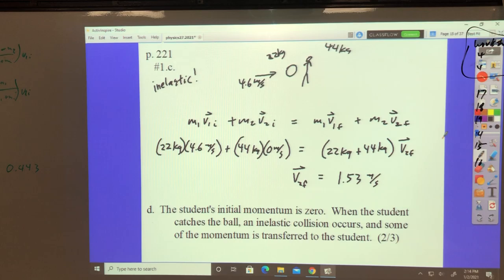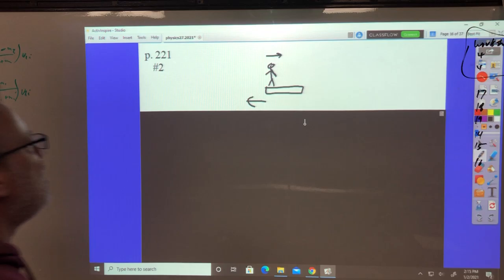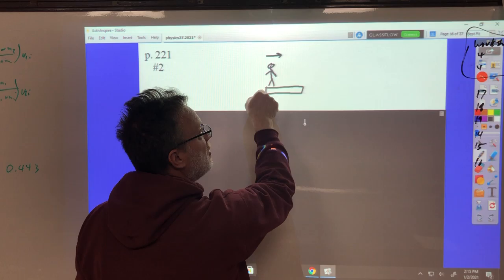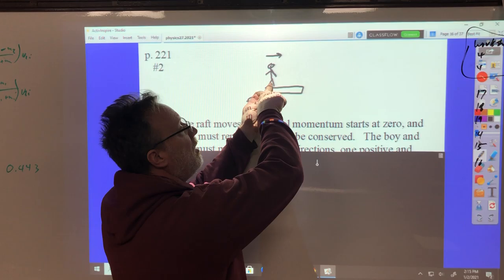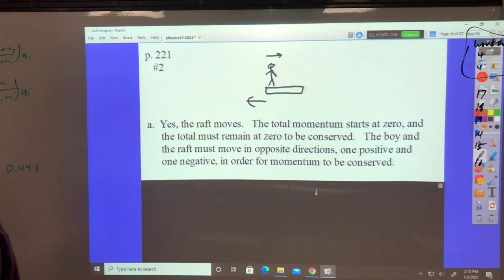Boy stands at one end of a floating raft stationary. Walks in a straight line at the opposite end of the raft. Does the raft move? Yeah, if the raft is stationary and you go this way, the raft would go this way. Center of mass of the system would remain where it is, by the way. Yes, the raft moves. The total momentum starts at zero, so if you give yourself a positive momentum this way, the raft must have a negative momentum that way. That cancels when they add back together. So the total must remain zero to be conserved. The boy and the raft must move in opposite directions, one positive and one negative, in order for momentum to be conserved.